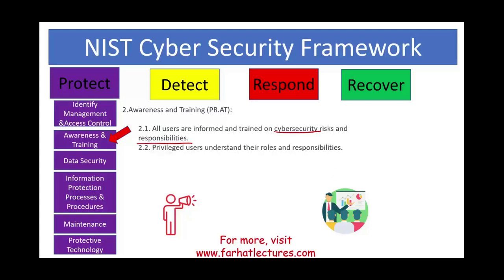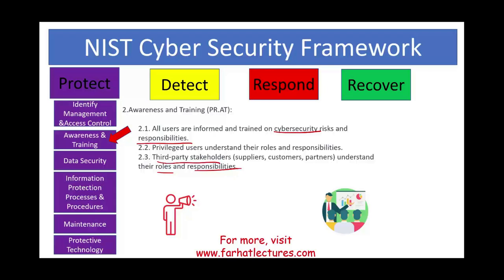Privileged users — those who have access to sensitive information — must understand their roles and responsibilities. They have access to important information and must be very careful: locking their phone, not keeping their laptop open, being more careful because they are responsible for sensitive information. Also, third-party stakeholders such as suppliers, customers, and partners need to understand roles and responsibilities, because they might have access to your accounts. Senior executives and decision makers also receive cybersecurity briefings so that everyone is on the same page about updates.